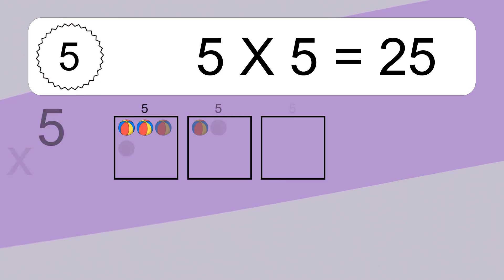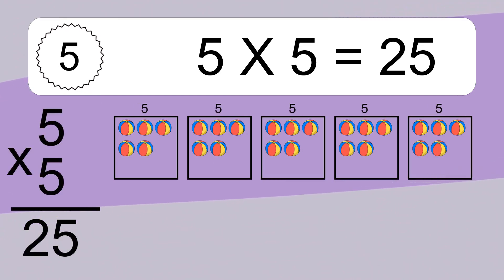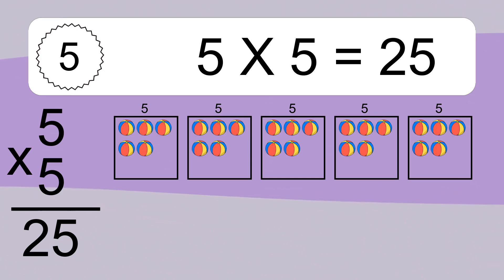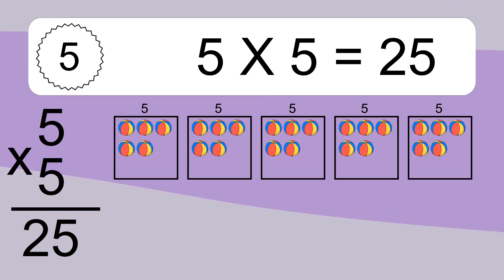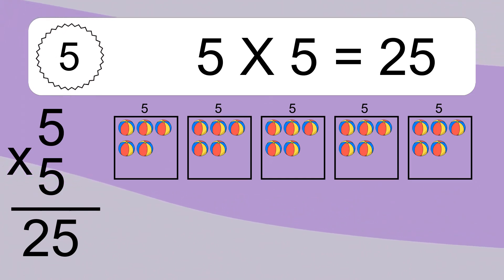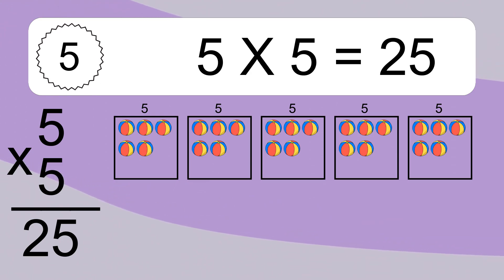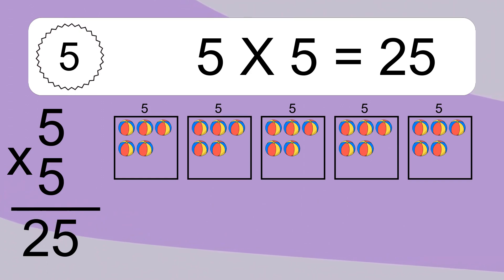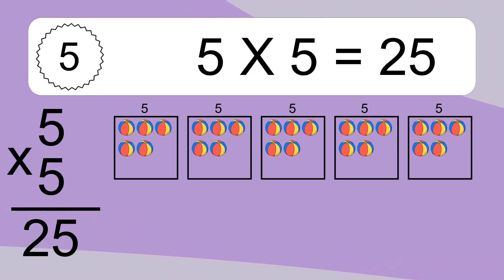5 times 5 equals 25. We have 5 boxes, and each box has 5 colorful balls inside. If you count all the balls in all the boxes together, you will have 5 times 5 balls. This equals 25 balls.